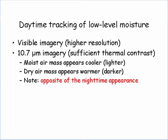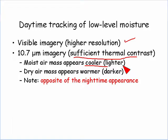Now let's go to the daytime. Here we have the advantage of using the visible imagery because of its higher resolution, but we can also still use the 10.7 channel if there's sufficient thermal contrast. The thing to note is that this is opposite of the nighttime appearance. Here the moist air mass appears cooler or lighter in the standard IR curve, and the dry air mass appears warmer or darker in the standard IR curve.